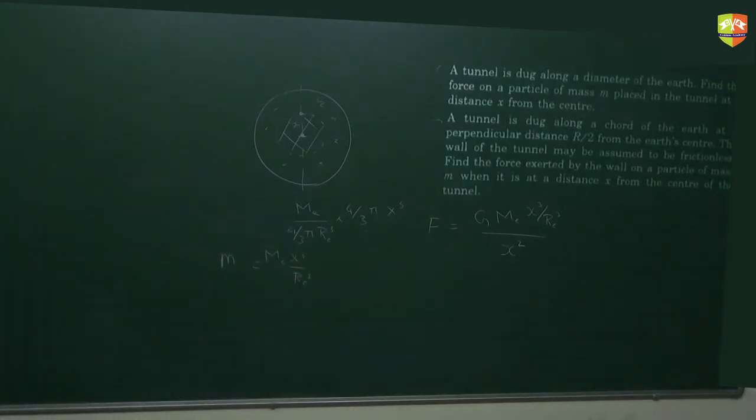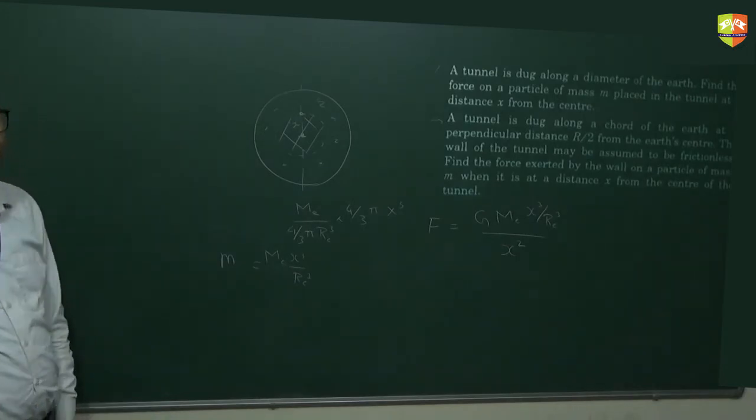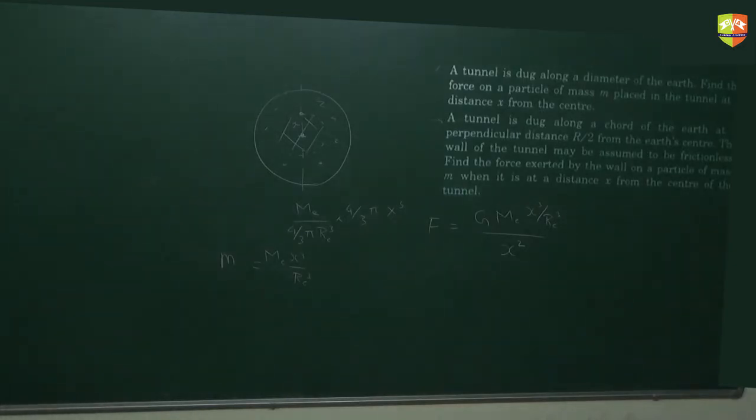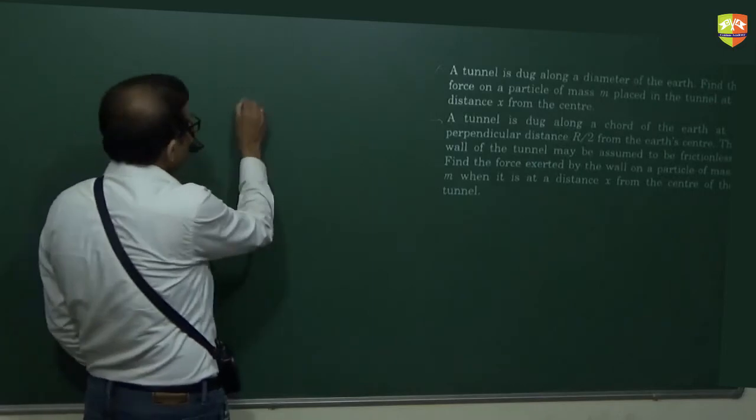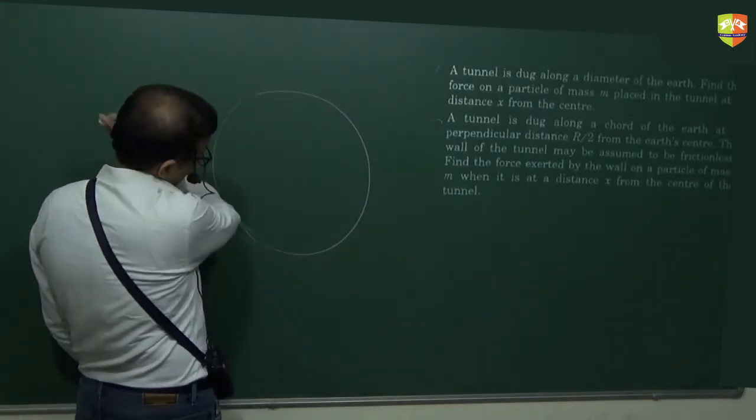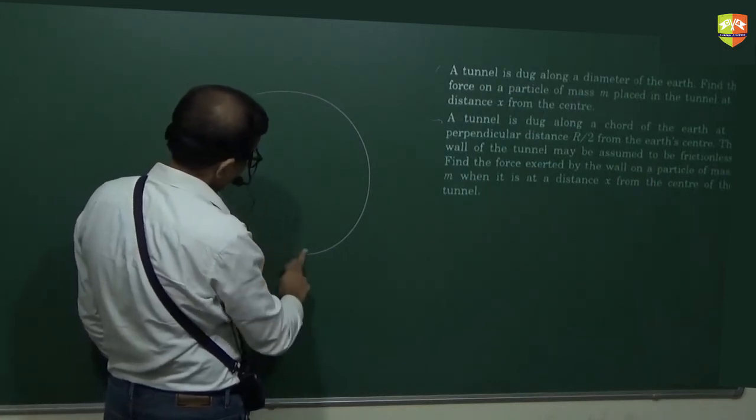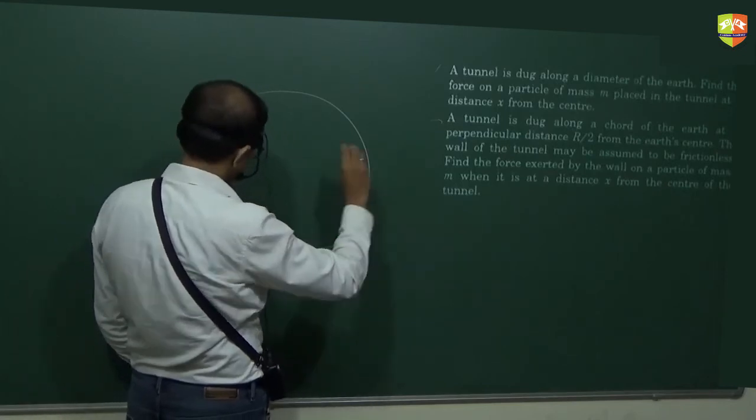Second one. So now you have to find the normal reaction in the second question. Do the force balance. It's very, very small. Let me see. And surprisingly, it doesn't depend on x. So does it m g by 2? m g by 2. Correct. m g by 2. Just draw a free body diagram.